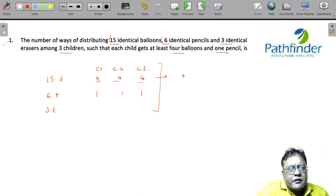So effectively, you have C1 plus C2 plus C3 among whom you have to distribute 3 identical balloons. Also among C1, C2, and C3, you have to distribute 3 identical pencils, because 3 are already distributed, one each to each child.